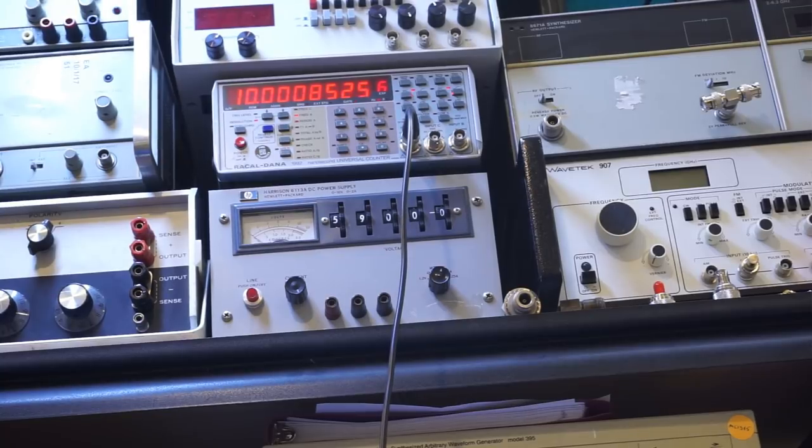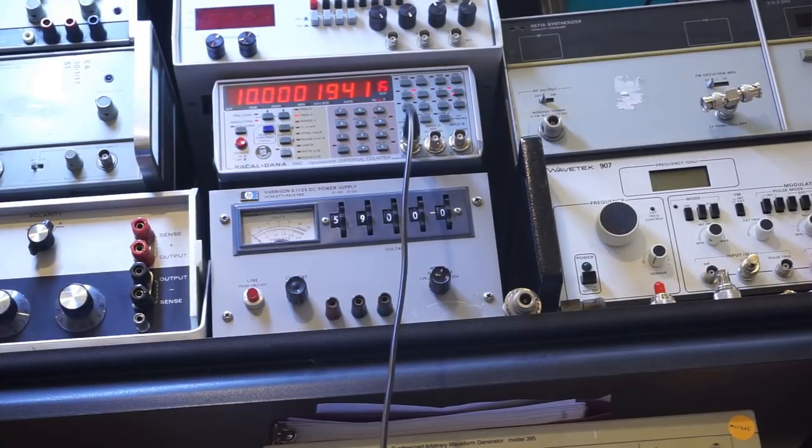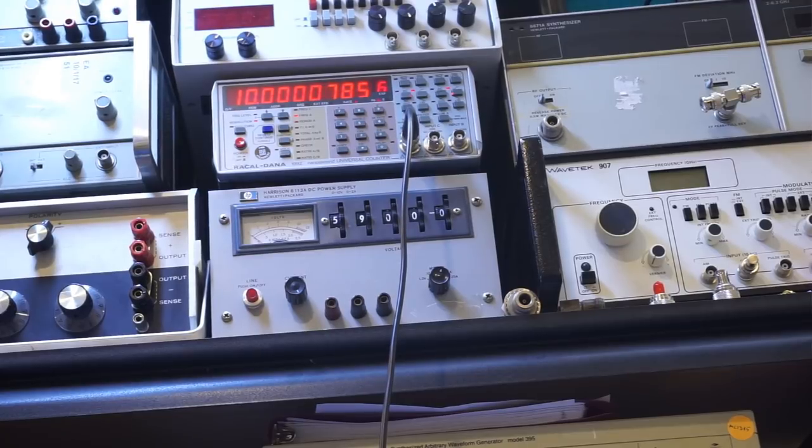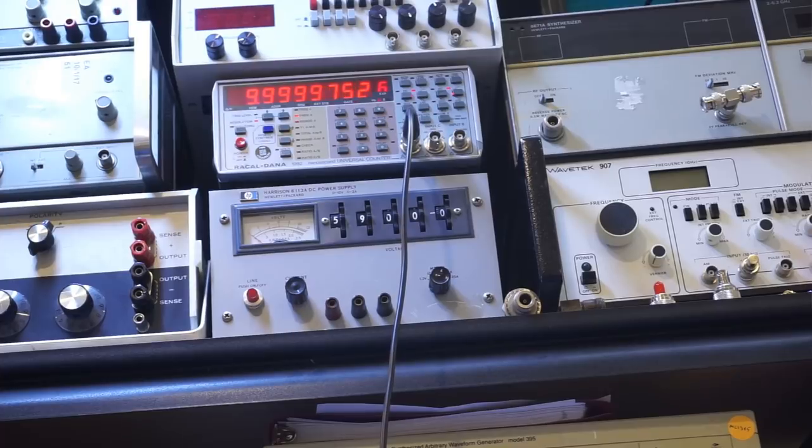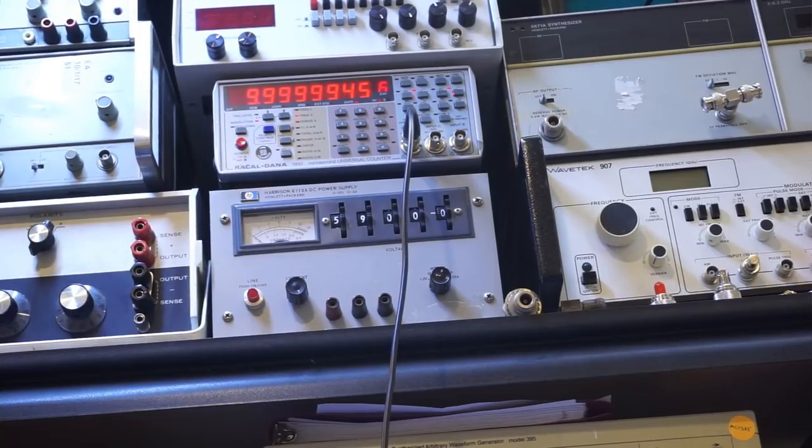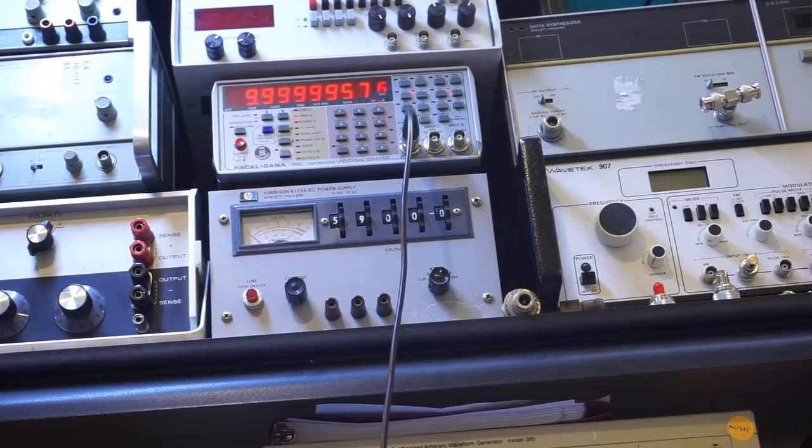And now you can see the frequency started dropping. And by the way, the fan of the power supply just kicked off. So now you can see that we have a very wide range of adjustment. Now let's keep adjusting the trim part that we just placed on, so that we get a nice 10 megahertz reading. We might not be able to get exactly 10 megahertz.